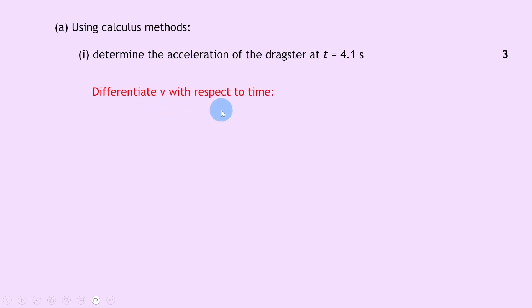So we want to differentiate v with respect to time. We can write a equals dv by dt, which is just an equation on your relationship sheet, and we can say that this is equal to d by dt of 6.6t squared plus 2.2t. If we differentiate, we bring the power down and multiply it by the number at the front, and then take one away from the power. So that's the same as 13.2t plus 2.2.